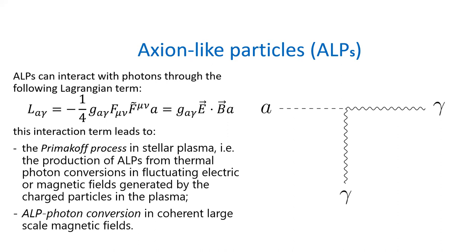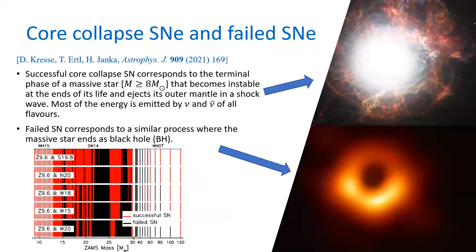Through this Lagrangian term, we can introduce two different processes. The first is the Primakov process, which we use in the stellar plasma to produce axions and axion-like particles from the interaction between photons and the fluctuating electric or magnetic field generated by charged particles in the plasma. The opposite process is the ALP-to-photon conversion in a large coherent magnetic field, such as an astrophysical magnetic field.